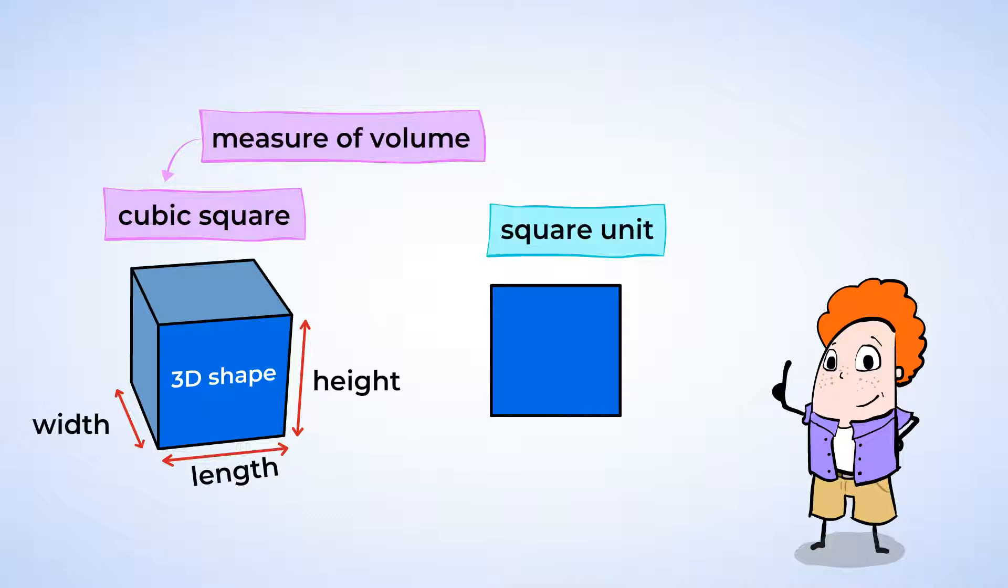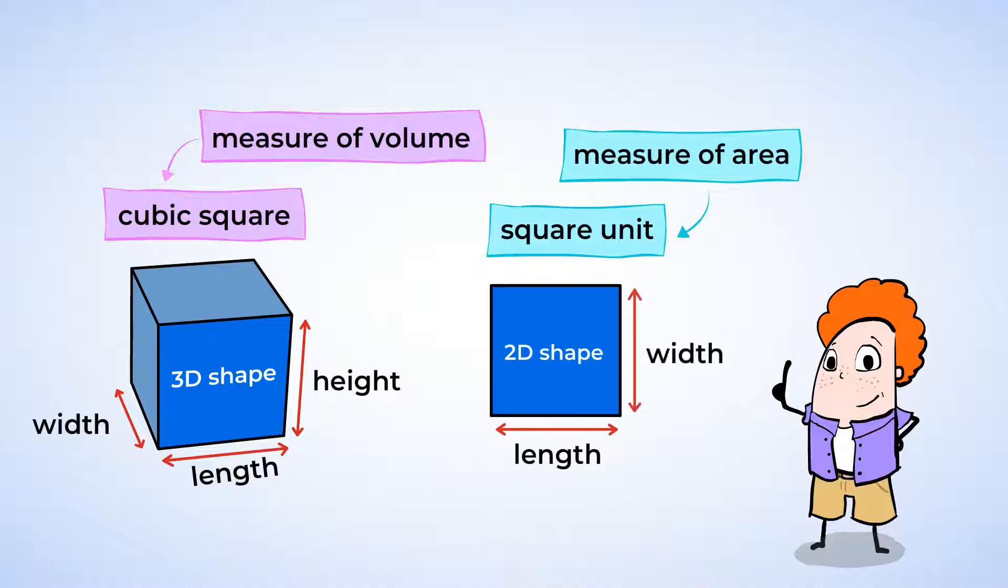A square unit, the general unit that is used to measure area. It's 2D, with length and width. But now, if you add another dimension to it, whoop! And give it height, it's a 3D cube. And that is one cubic square.